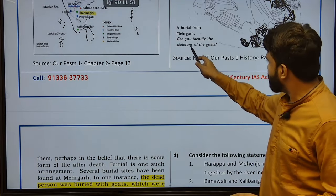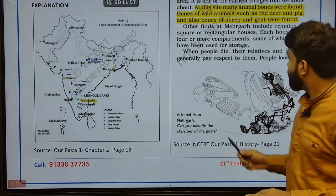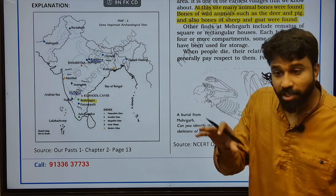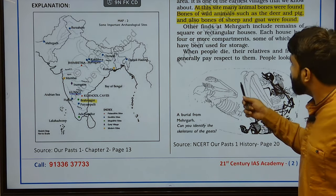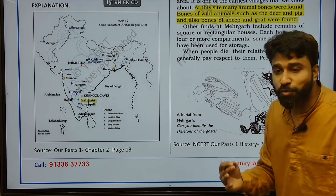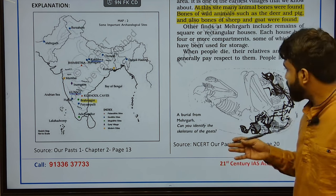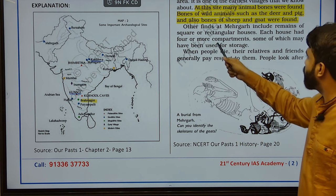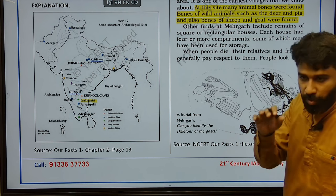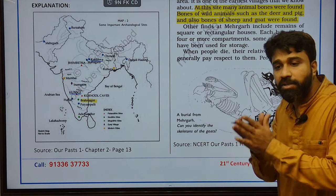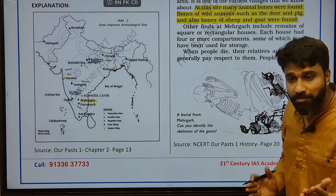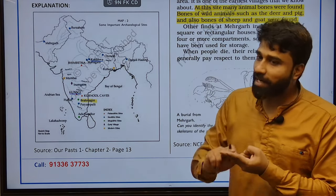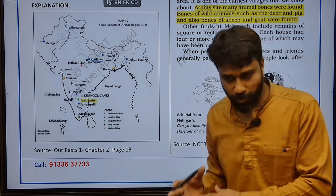Burials from Mehergar also indicate certain traits — there may be life after death. That was a belief during Mehergar Neolithic times. That is why people also buried the tools used by those who had died. Other points at Mehergar include remains of square or rectangular houses, each with four or more compartments, some of which may have been used for storage. The Mehergar community — Neolithic in nature — also had storehouses and cultivated barley and wheat, and raised sheep and goat.